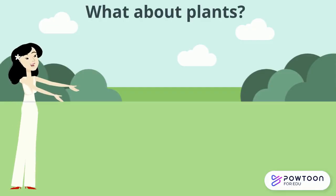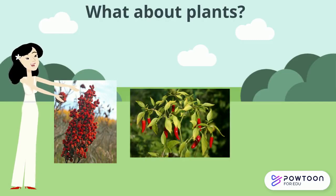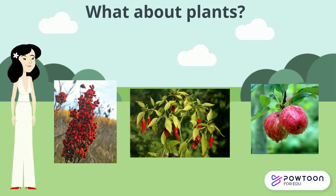So what about plants? Some plants are poisonous so animals don't eat them. Some are spicy to prevent the same thing. Other times, plants want animals to eat them to carry their seeds around, so these plants might be extra tasty.